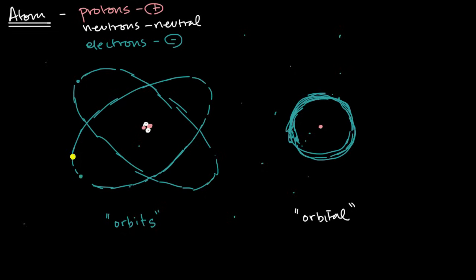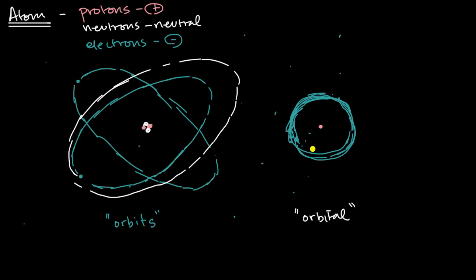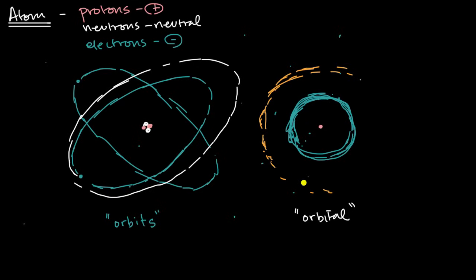If you think about planets or a satellite orbiting around, if you were to give it a little bit more energy, it could have a larger orbit. But quantum mechanics isn't about things happening gradually. Quantum really means that you're talking about discrete packets. So in quantum physics and quantum chemistry, if you add a certain amount of energy to an electron, instead of having a 90% chance of being found in this first shell — this first energy level — it would then jump into the next energy level or the next shell. You have to give it enough so that it jumps into the next energy level.